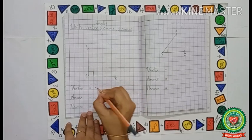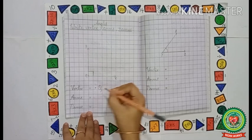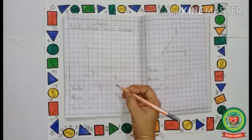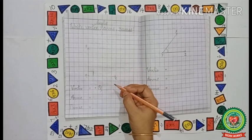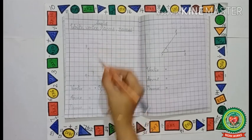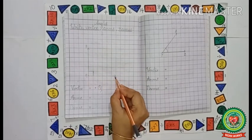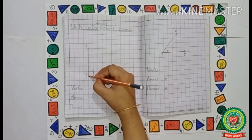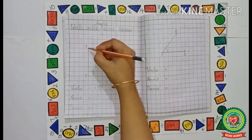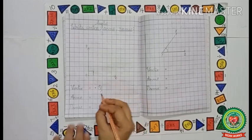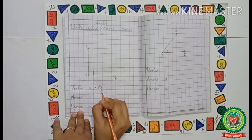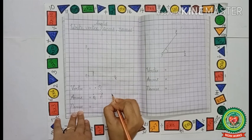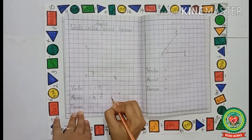Next, we have to identify the arms. Arms are the two rays of the figure. Always remember, we should name the arm starting from the vertex. So it will be QP and QR. We will put the symbol of arm QP and QR.